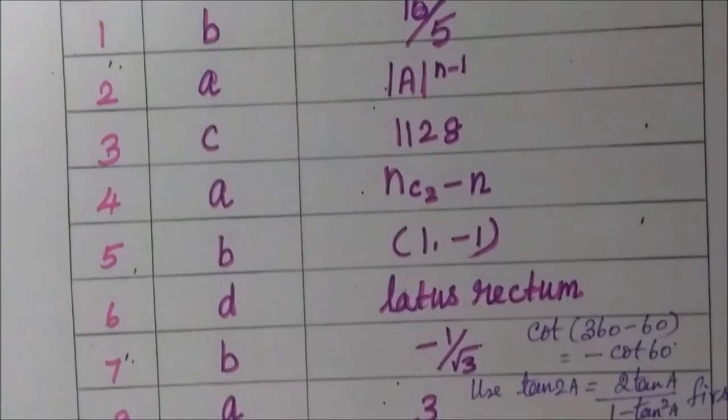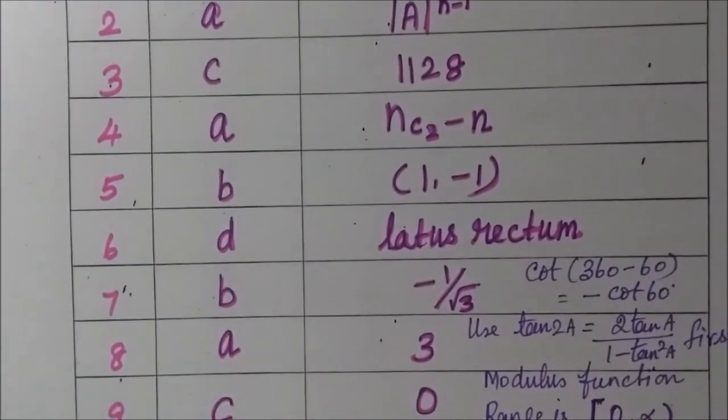Question 6: option d, latus rectum. Question 7: option b, minus 1 by 3, cot of 360 minus 60 degrees, which is minus cot 60 in the 4th quadrant.